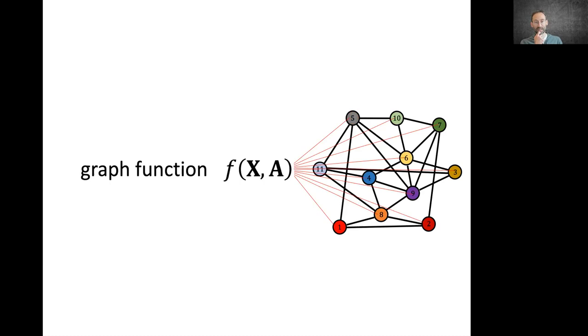We have n factorial such permutations, and that's the degree of freedom that we have here.